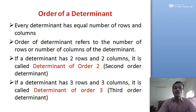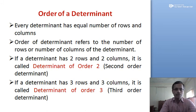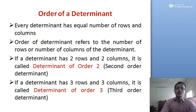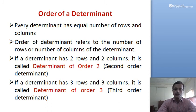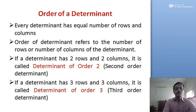Every determinant has an equal number of rows and columns. If there are two rows and two columns, it is called a second order determinant. If there are three rows and three columns, it is called a third order determinant. Four rows and four columns give a fourth order determinant. The order of a determinant equals its number of rows or columns.